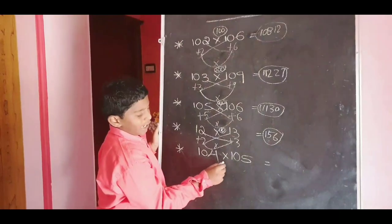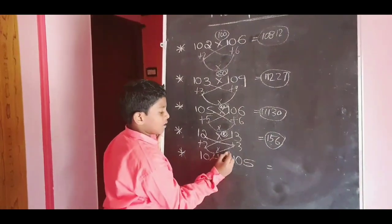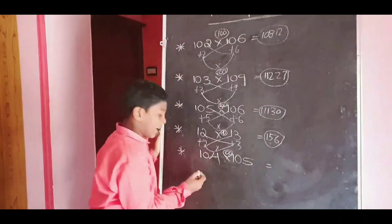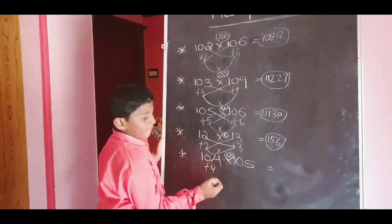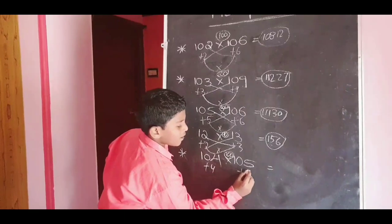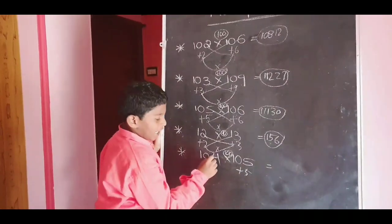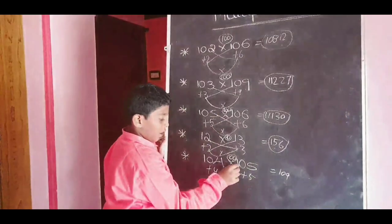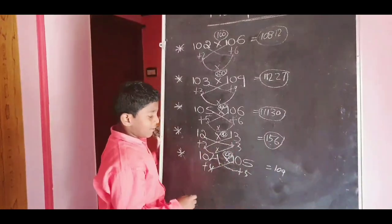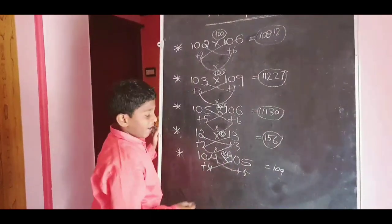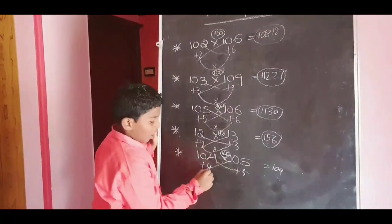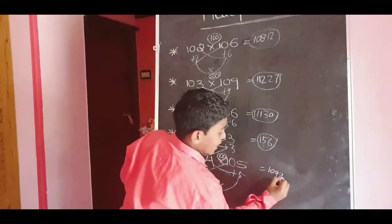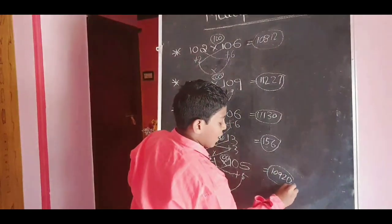Next: 104 and 105. This is nearest to 100. For 100, 104 plus 4; for 100, 105 plus 5. 104 plus 5 equals 109. 105 plus 4 equals 109. 4 plus 5 is 9, and 9 plus 100 equals 109. After, these two should multiply: 4 into 5. 4 fives are 20. The answer is 10920.